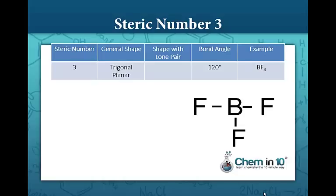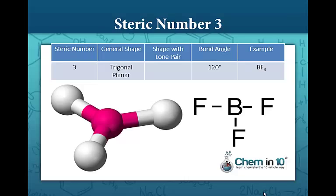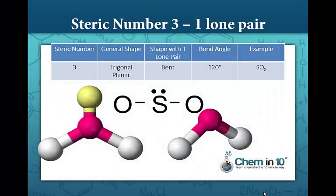Steric number of three, look at boron trifluoride. We have a trigonal planar shape. So these fluorine atoms will spread out as far from each other as possible, which makes up a trigonal planar. If one of those shapes were replaced with a lone pair as opposed to the three fluorine atoms, so in this case we have that yellow which is the lone pair, what results is a bent molecule, and again its angle is 120 degrees just like the angles in the trigonal planar.